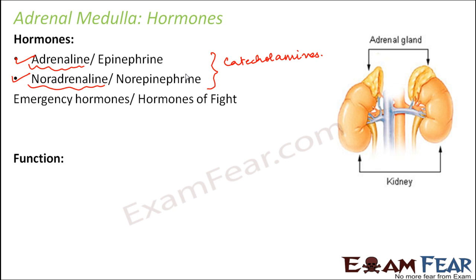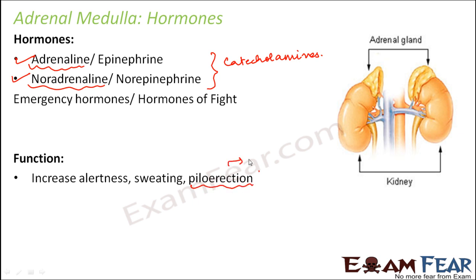Let us look at the functions of these adrenal medulla hormones. They increase alertness — for example, if you are sleeping and hear somebody breaking the door of your house, you tend to become alert and cautious, and that is due to adrenalin. They also increase sweating and piloerection. Piloerection is the erection of hair on the skin, which occurs due to the contraction of tiny erector muscles called pilo-erector muscles just below your skin.